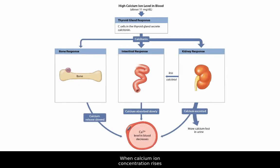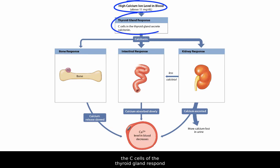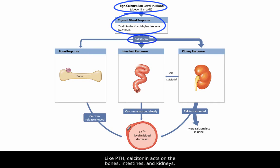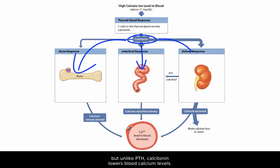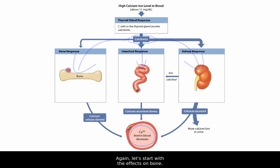When calcium ion concentration rises above 11 mg per deciliter of blood, the C-cells of the thyroid gland respond by secreting another hormone, calcitonin. Like PTH, calcitonin acts on the bones, intestines, and kidneys. But unlike PTH, calcitonin lowers blood calcium levels.